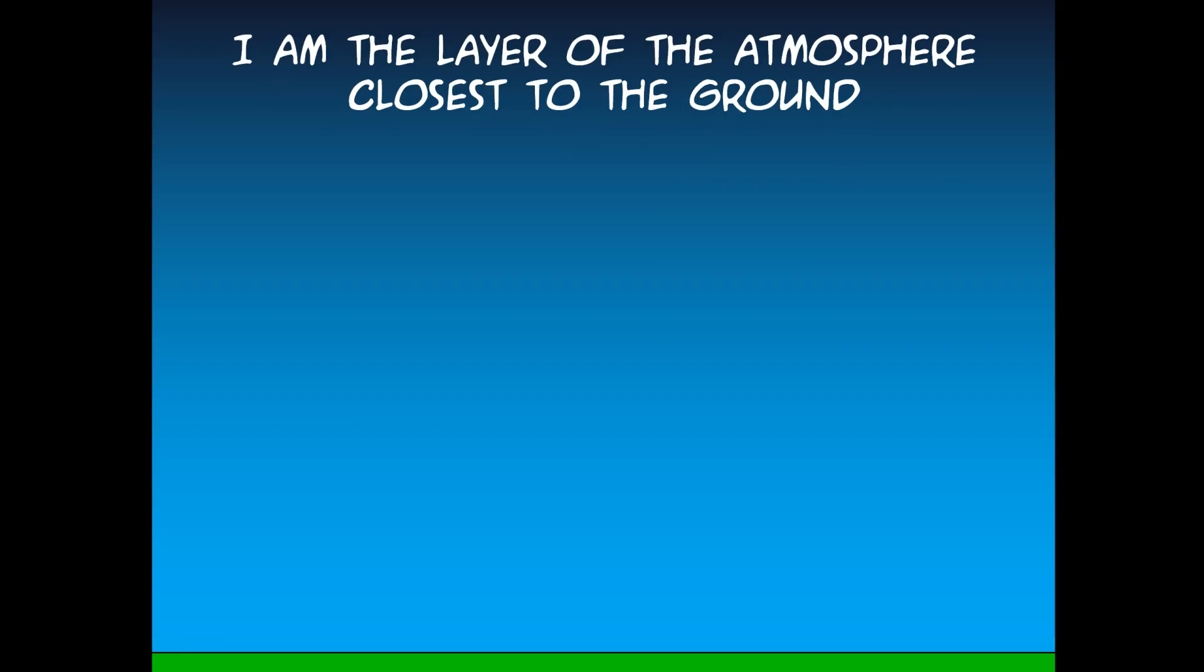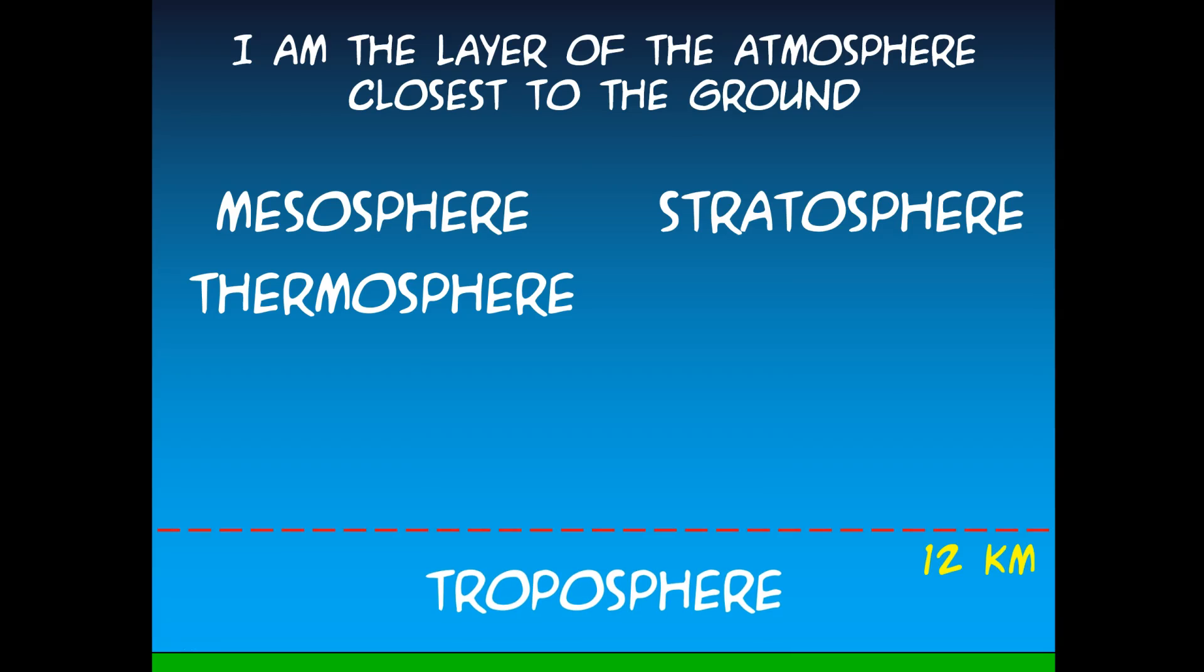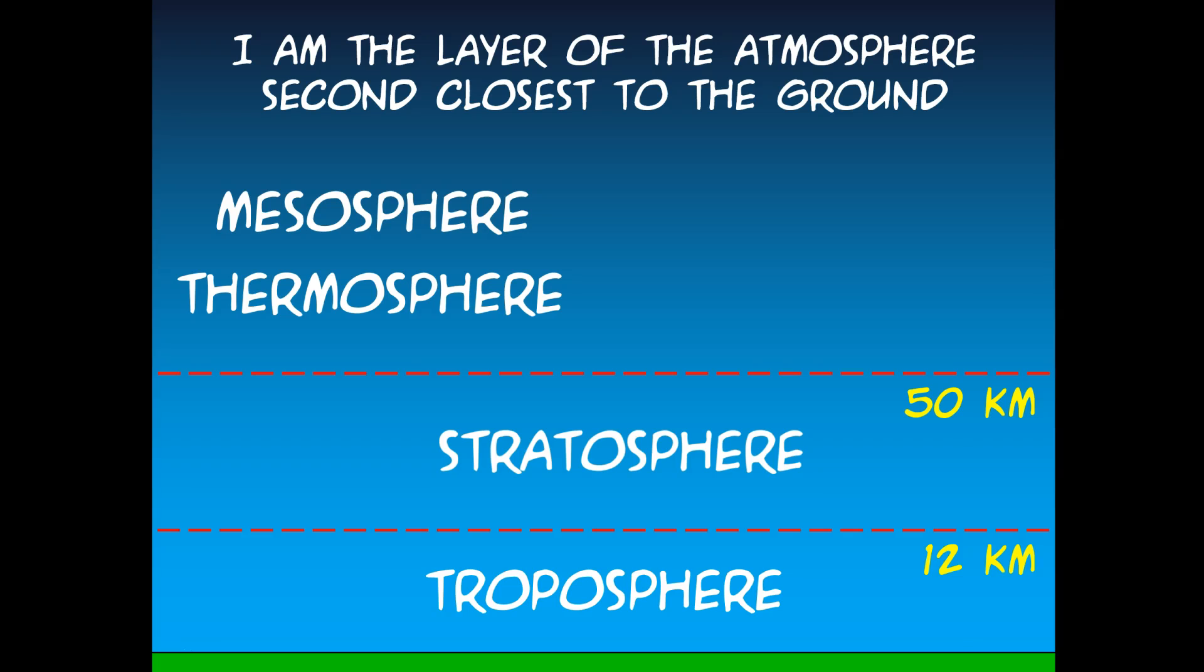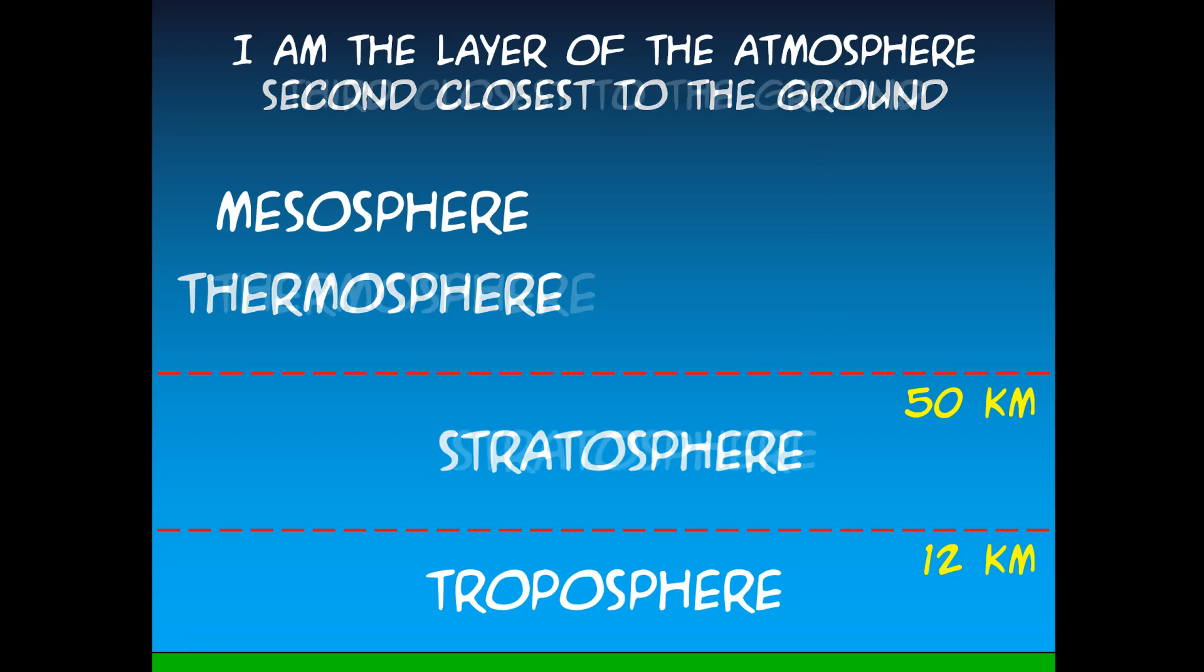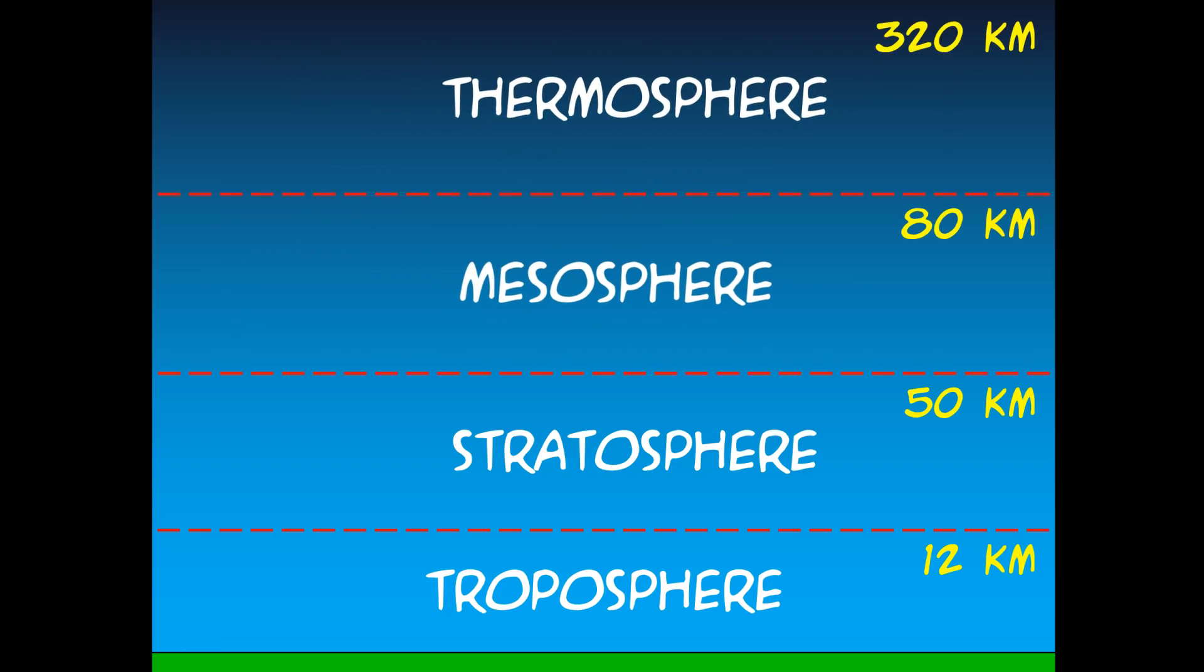Do you remember what is the closest layer of the atmosphere to the ground? We just saw it. Out of these four, it was the troposphere. The troposphere goes up to 12 kilometers. Do you remember the next layer? The one second closest to the ground? You guessed it. That's the stratosphere. The stratosphere goes to an elevation of 50 kilometers above the ground. Now, which order are the last two? The mesosphere first, which goes up to 80 kilometers, and then the thermosphere, which goes up to 320 kilometers. Let's learn a little bit more about each layer and what happens there.